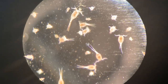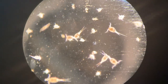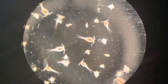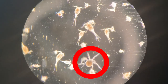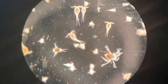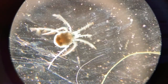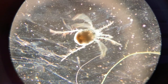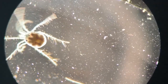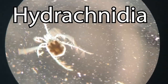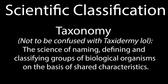However, this week we are going to focus on this organism: the water mite. This is a water mite. Water mites are a group of arthropods called Hydrachnidiae. Hydrachnidiae are in the kingdom Animalia, the phylum Arthropoda, the class Arachnida, and the order Trombidiformes.